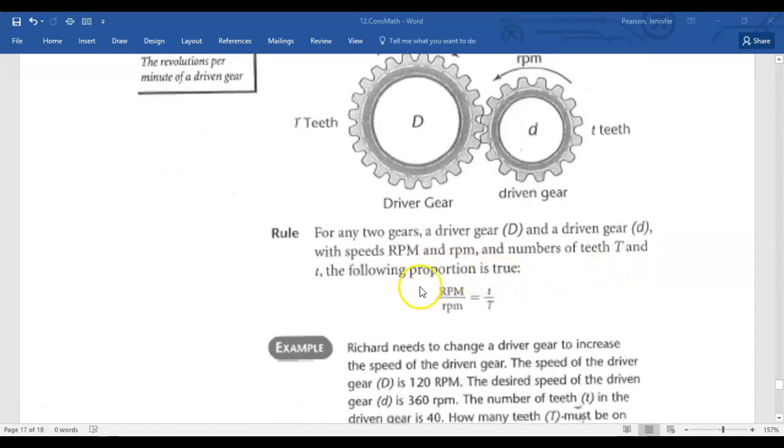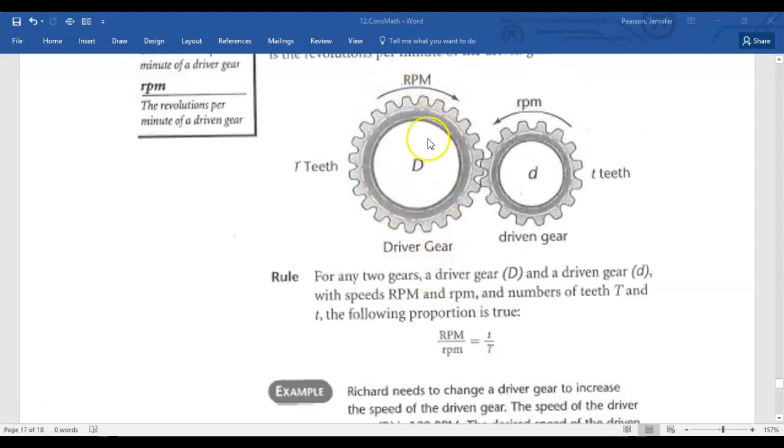The rule that we're going to use is right here. It's a little hard to see, but it's RPM over RPM, and it specifically is capital RPM, which is the speed of the large gear, divided by lowercase RPM, which is the speed of the smaller gear. And then in this fraction, we have the number of teeth in the smaller gear, and then the number of teeth in the larger gear.